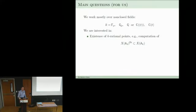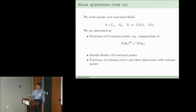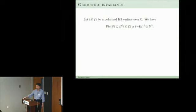The Brauer-Manin obstructions — you'd want to compute some subset of the adelic unobstructed points. How do you do it? How do you do it in theory, and how do you do it in practice? I would also like to know about the density of rational points over non-closed fields, for example the rational numbers, and we are interested in interactions between rational curves and rational points.